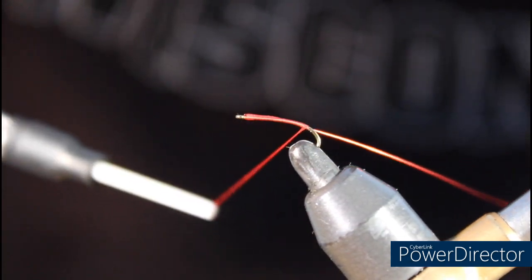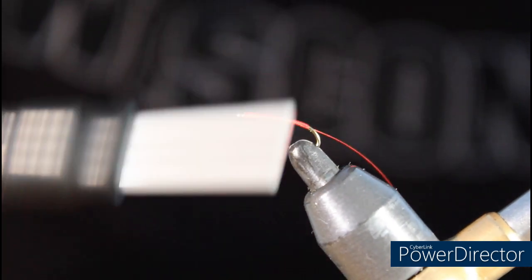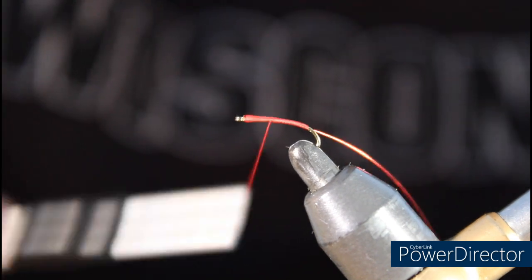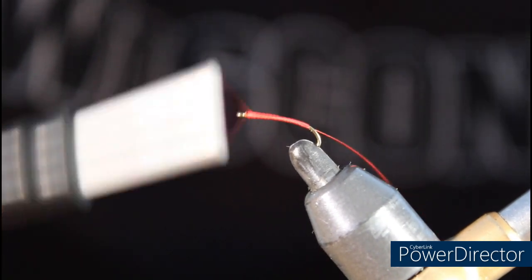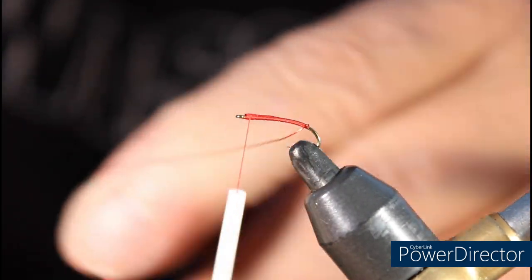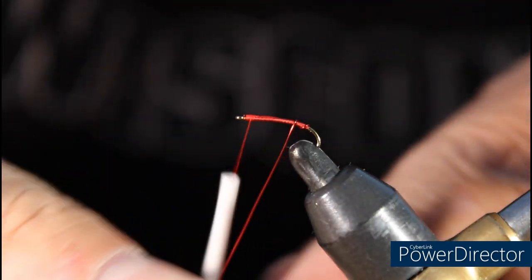As we get back to the bend of the hook, we're going to move our thread forward to the eye of the hook. Then we're going to palmer this wire all the way to the eye.